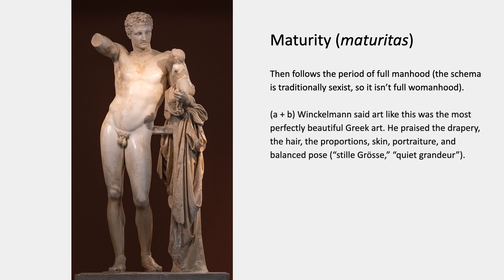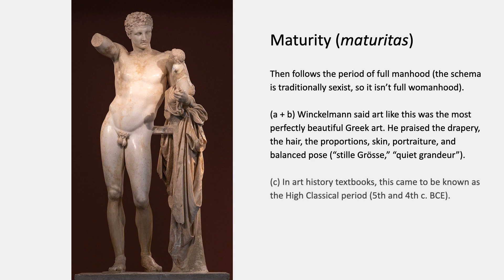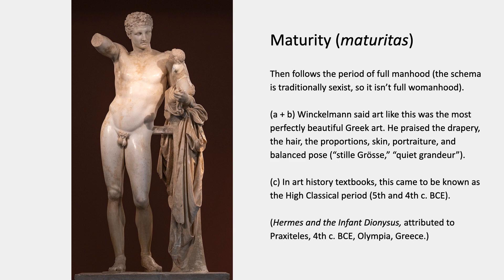The first person to describe maturity and the first person to appreciate it was Winckelmann in the 18th century. He said that art like this is the most perfectly beautiful Greek art. He praised the drapery, the hair, the proportions, the skin — which was often highly polished — the portraiture, and the balanced poses. He has a nice description for some of these things; he calls it 'quiet grandeur.' In art history textbooks this has come to be known as the High Classical Period, 5th and 4th century BCE. One of the most famous examples is attributed to Praxiteles, one of the major sculptors.